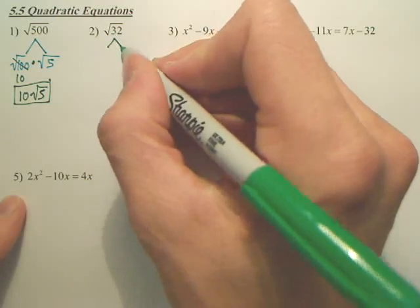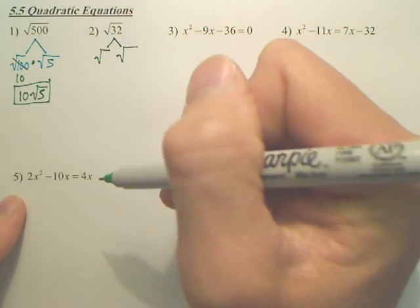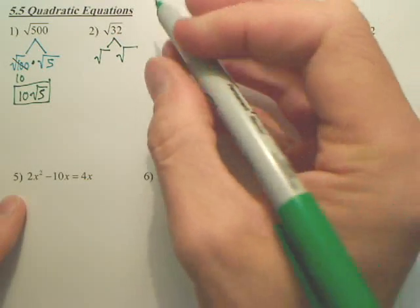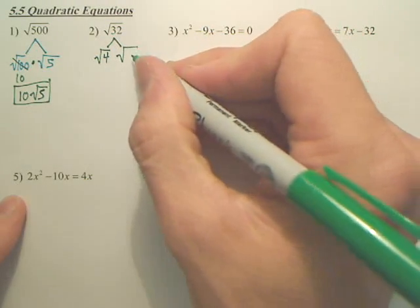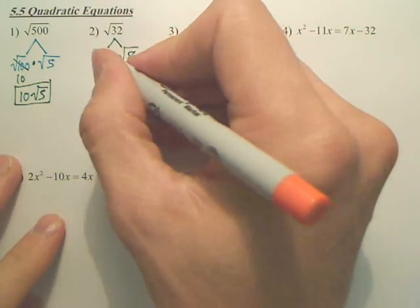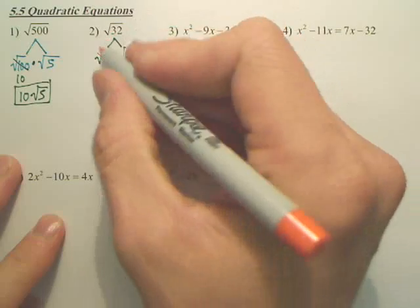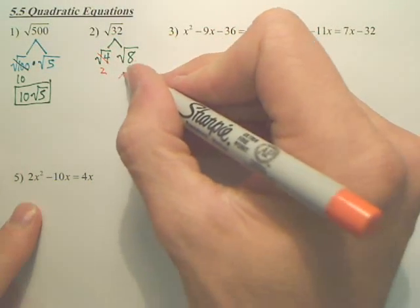Look at number 2. You're trying to think of square numbers that go into 32. There are a couple of different square numbers that go in, but the first obvious one is 4. 4 times what? 4 times 8 gives you 32. Now, what does 4 equal? What's the square root of 4? 2. So that becomes a 2. But there's still a problem.